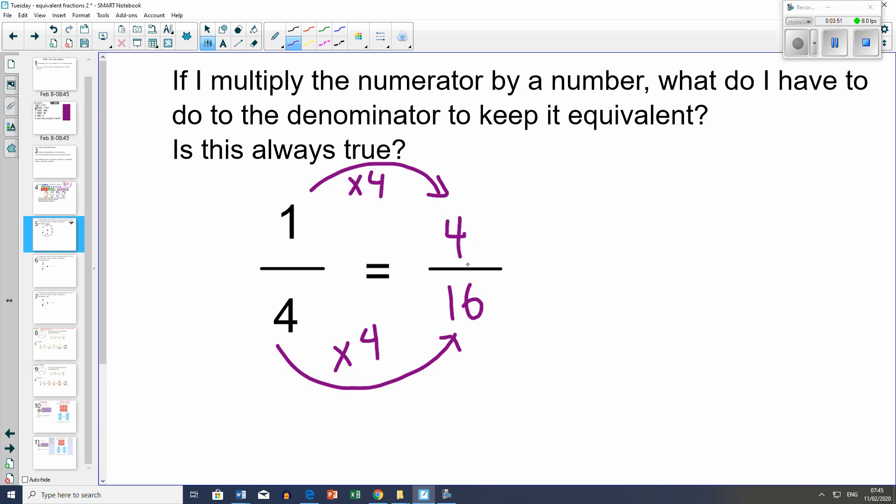If you don't, what we've done is actually this. Because when we're multiplying with fractions, we go across - we multiply straight across. If I just said multiply by 4, that's actually the same as this.